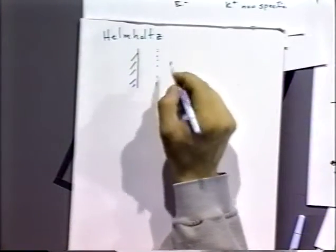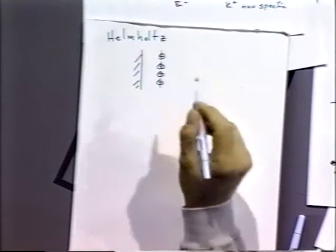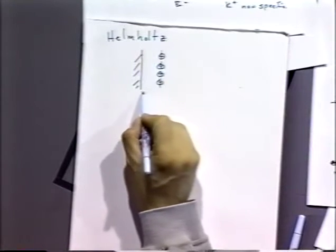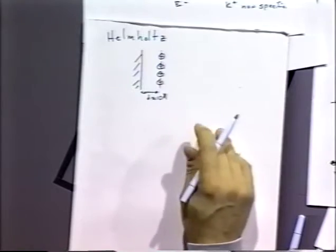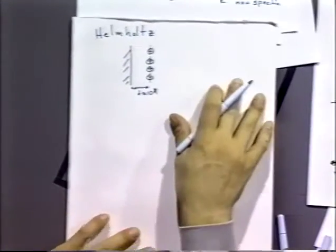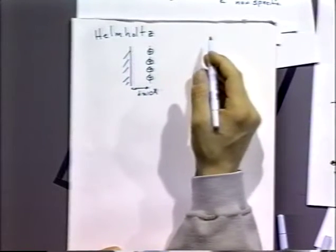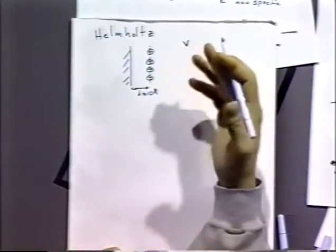Helmholtz — and we've already heard about the inner and outer Helmholtz layers — said ions lined up like little soldiers right on a line a certain distance away from the electrode interface. He said the distance was approximately 10 angstroms away from the interface, and all the things that were going to adsorb to the electrode were right on that line, probably for ease of mathematical computation.